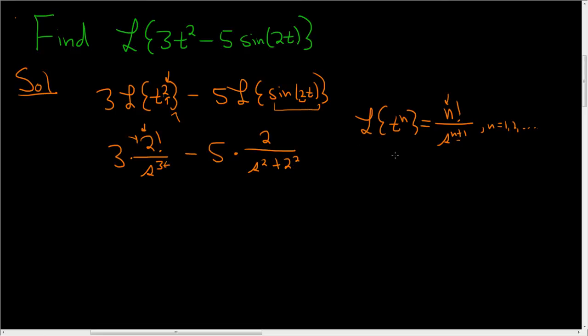What about this one? Well, the Laplace of sine kt, this is equal to k over s squared plus k squared. So you just put the k, which is 2 up top, and on the bottom, it's always s squared plus k squared.